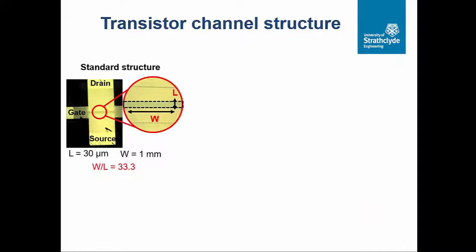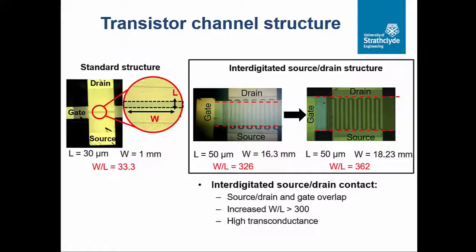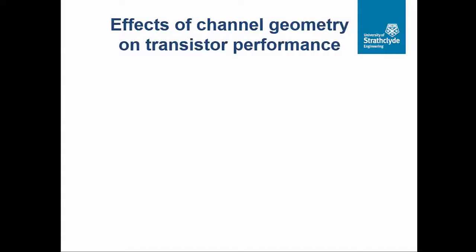Here's the same structure again, but what we did was utilize an interdigitated source-drain contact, which looks like this. It has a similar channel width, but we have a meandering channel. So we can increase L to about 50 micrometers. The width is increased based on the width of the gate — from about 1 millimeter all the way to about 18.23 millimeters. So we increased the W/L ratio to about 362. With W/L above 300, we can achieve high transconductance.